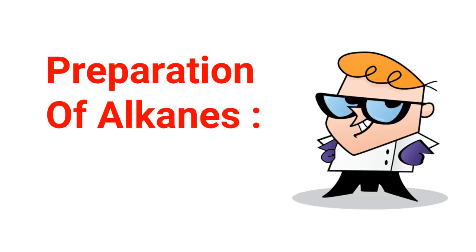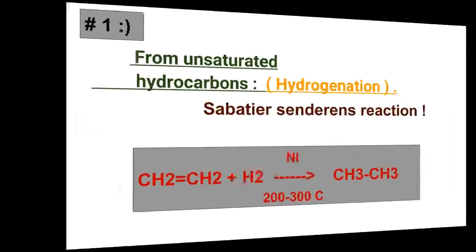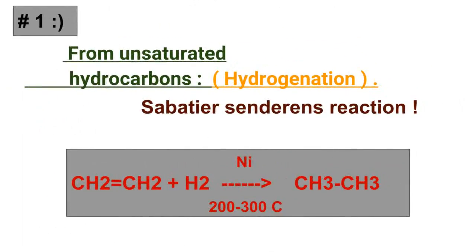Hello students. In this video we're going to learn about five methods for the preparation of alkanes. Alkanes can be prepared from unsaturated hydrocarbons, from alkyl halides, from monocarboxylic acids, from carbonyl compounds, and from Grignard reagents.